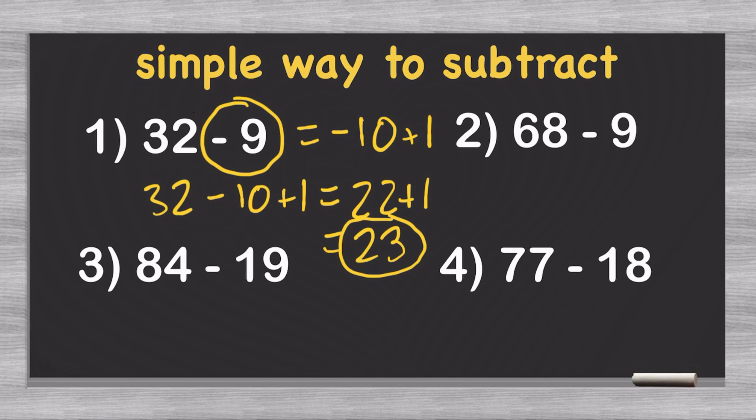So let's take a look at another example to really solidify our grasp. Let's take a look at 68 minus 9. Again, normally you would have to carry over. But here, all you have to do is think of 68 minus 9 as 68 minus 10 plus 1. So 68 minus 10 is 58 plus 1 is 59. And that is, once again, our answer.